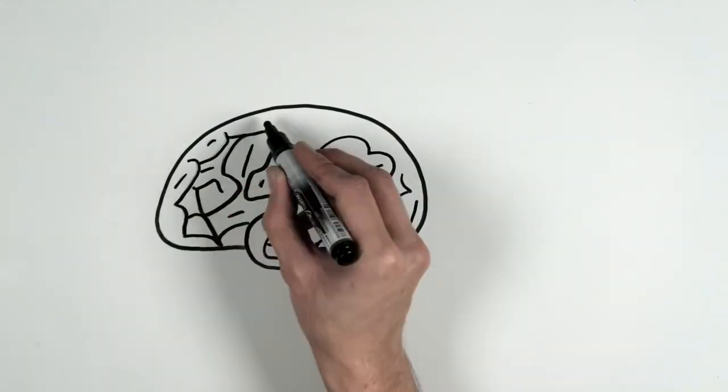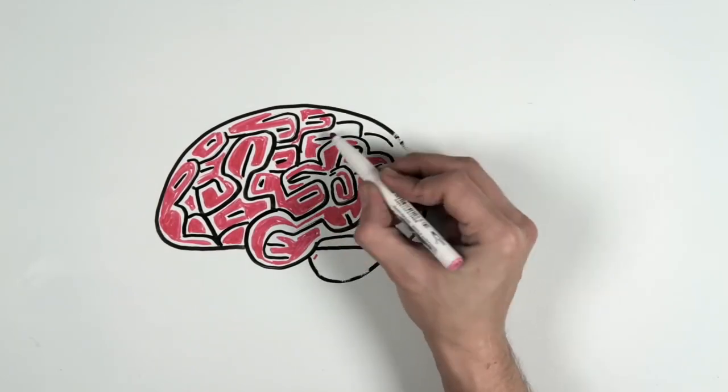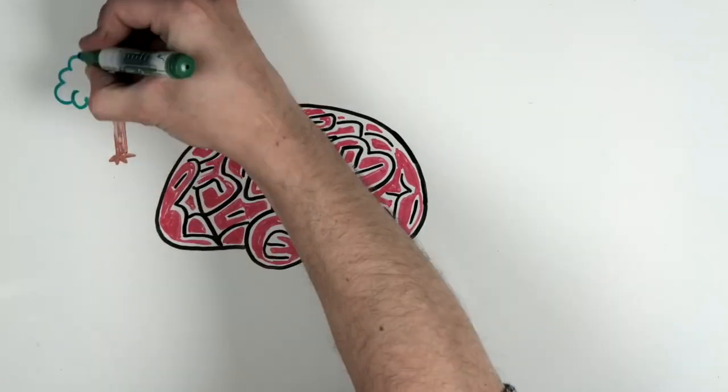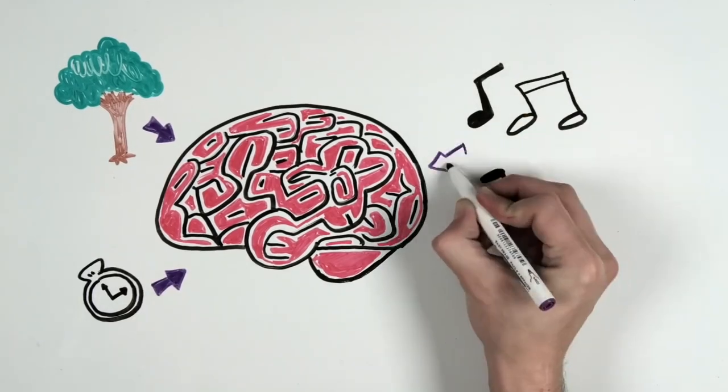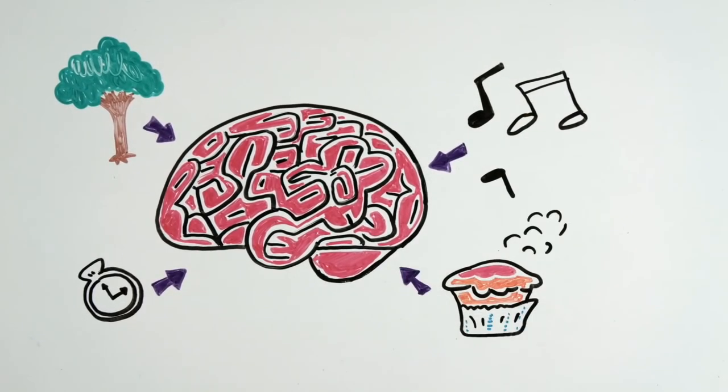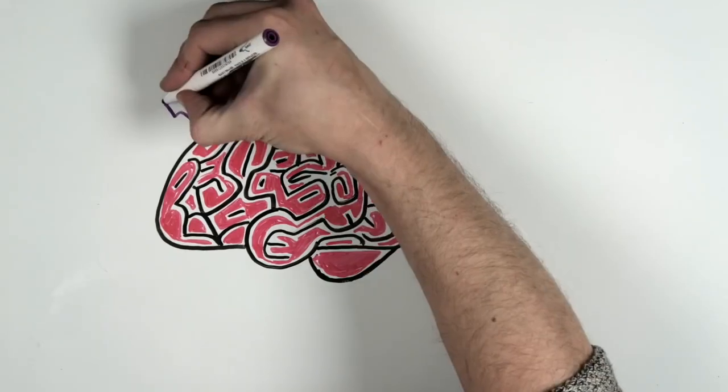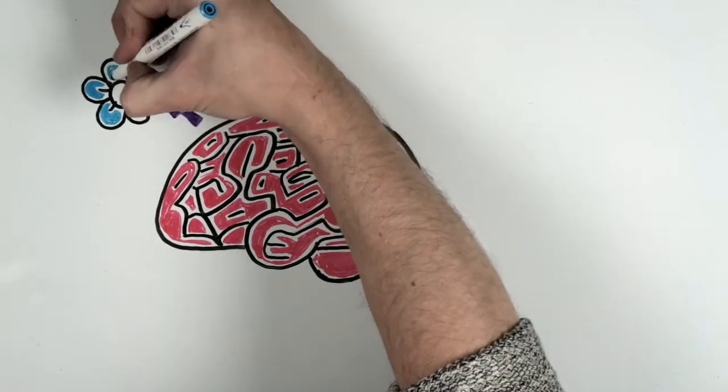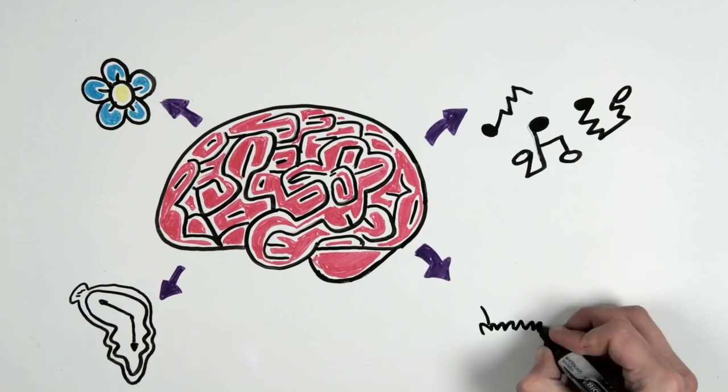But why do we react like this? Cognitive psychologists believe that it is because the part of the brain responsible for sensory perception is accustomed to dealing with a large amount of information. But when these stimuli reduce, the brain processor decides to create them itself. And it's the brain that makes sense of them.